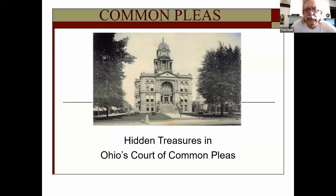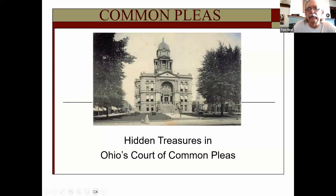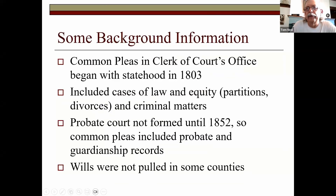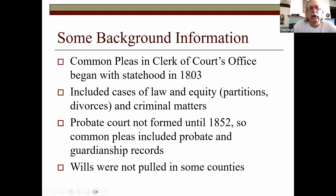I'm going to talk about hidden treasures in the Court of Common Pleas. Because I worked at the Ohio Genealogical Society for 37 years, most of my examples are from Ohio, but these types of items found in this record group are going to be common to Indiana and many other states. Ohio statehood is in 1803, and Common Pleas records exist from that time — actually from prior to that with the Northwest Territory records.